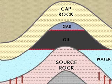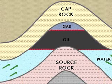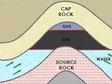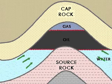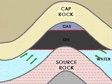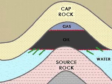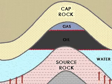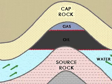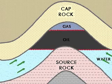Oil and gas originate from organic matter in sedimentary rocks. This organic debris accumulates at the sea bottom during the process of sedimentation. Bacteria and pressure work on this organic matter and break them down into substances rich in hydrogen and carbon.